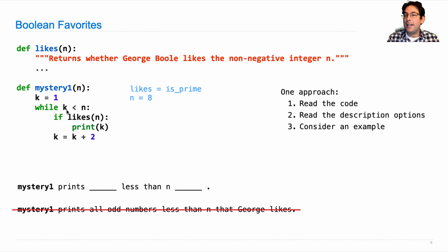It doesn't print anything because n never changes and George didn't like n. So a correct description would be that mystery one prints all odd numbers less than n, but only if George likes n, because we have likes n here. This would have been the correct description if this had said if likes k, but it doesn't.